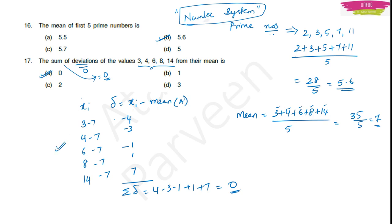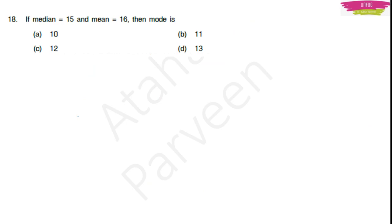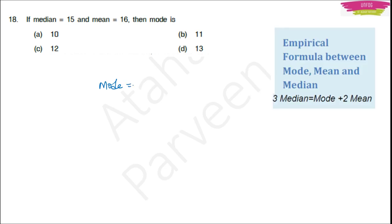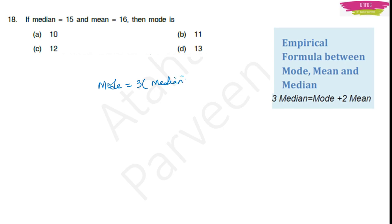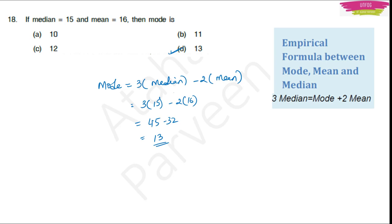Question 18: If median is 15 and mean is 16, then mode is. Using the empirical formula rearranged: mode = 3 × median − 2 × mean = 3 × 15 − 2 × 16 = 45 − 32 = 13. Option D is the right answer.